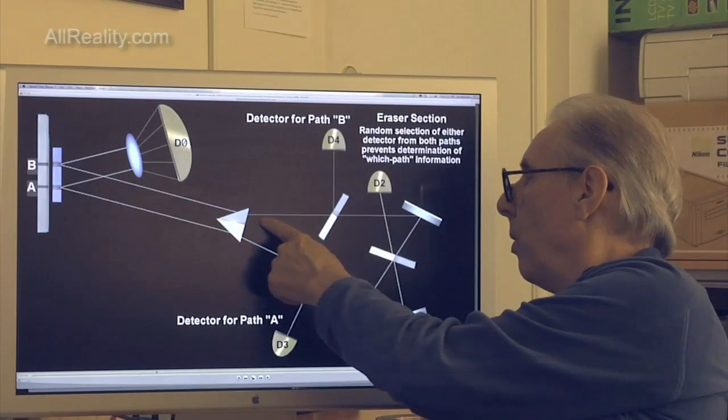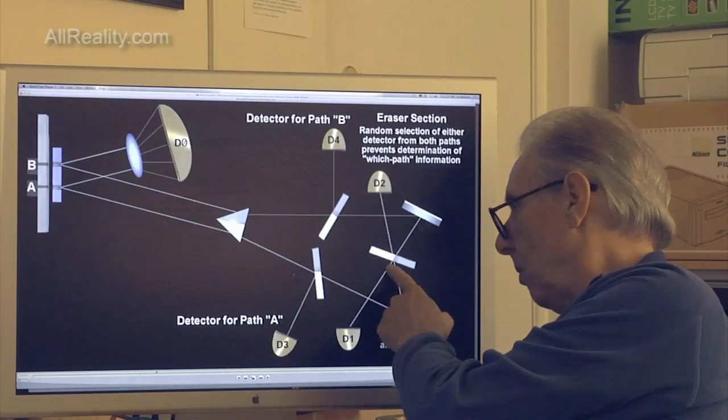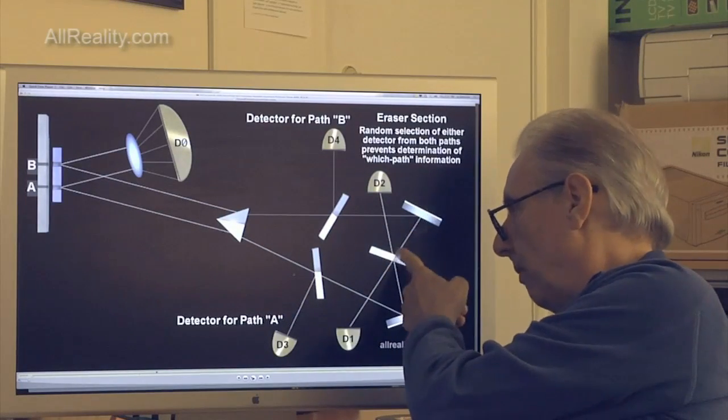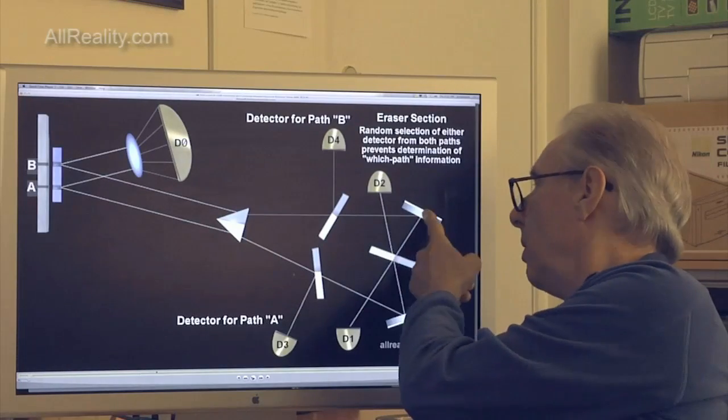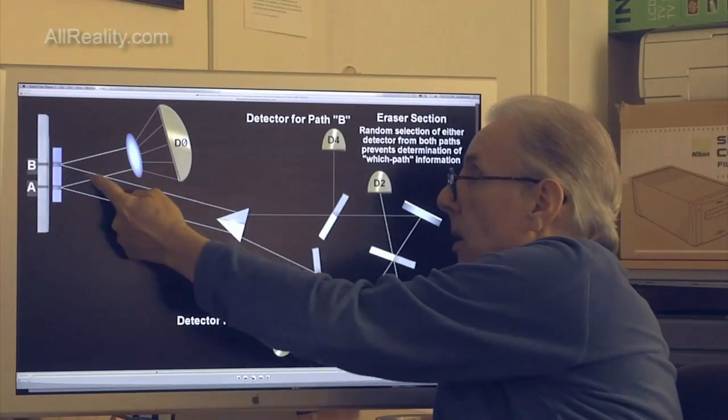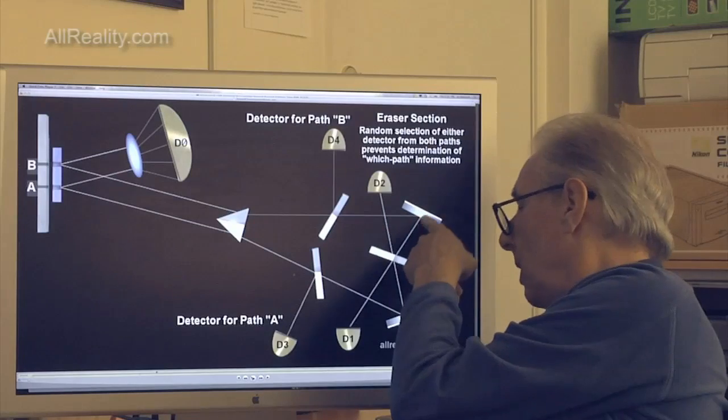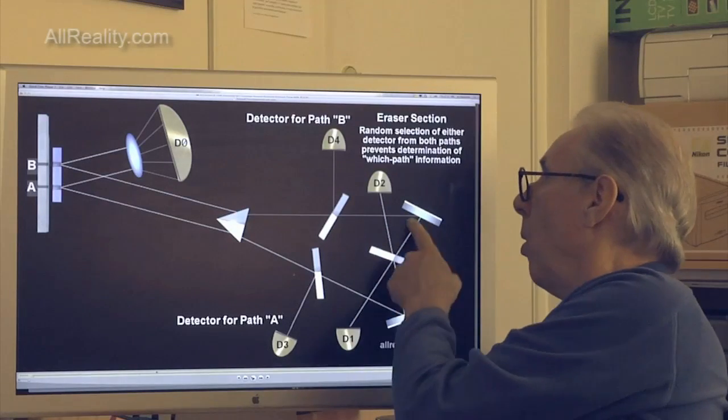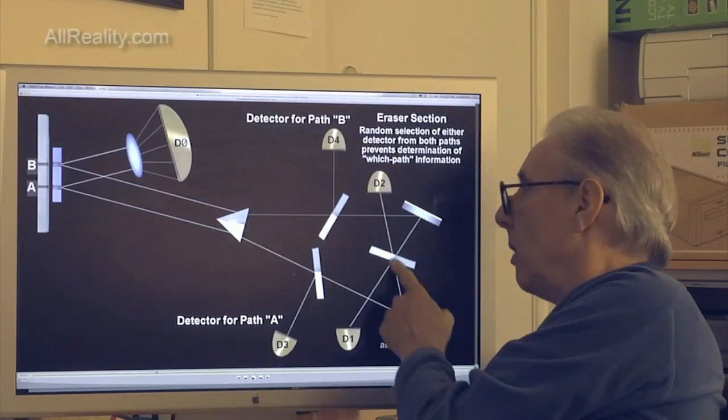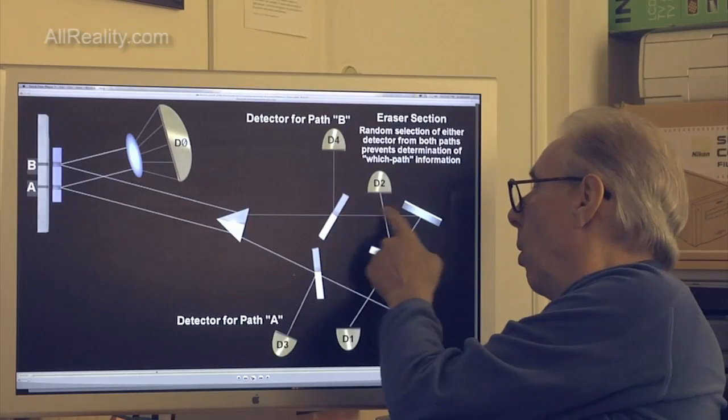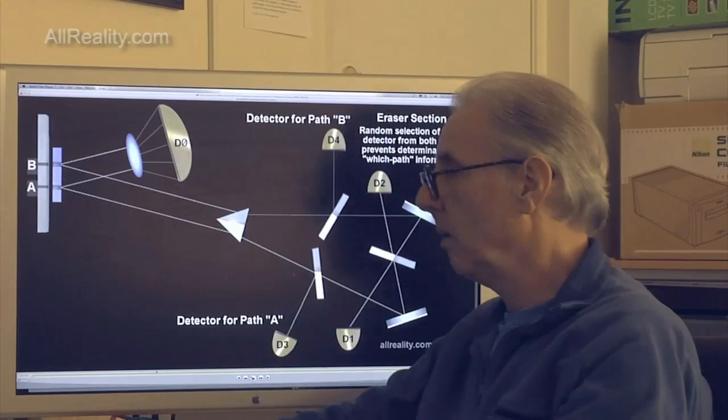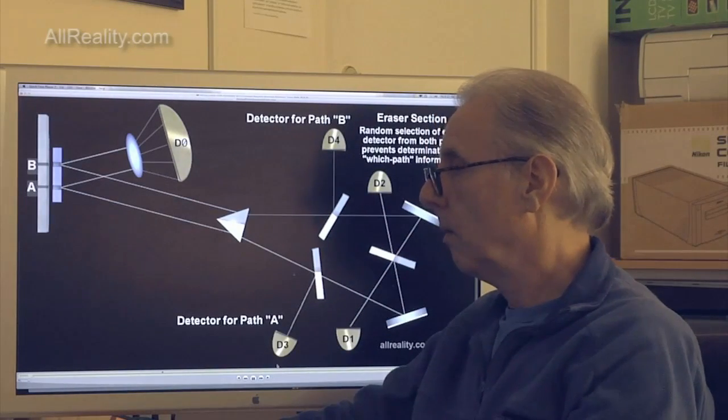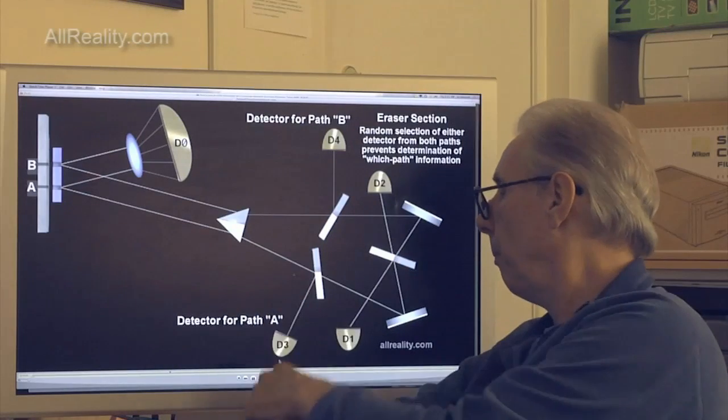When the photon gets here, they bounce around again, half-silvered mirror, so it can either get detected. This path B can either get detected at D1 or D2, because it can bounce up or it can come down. Same thing for path A.